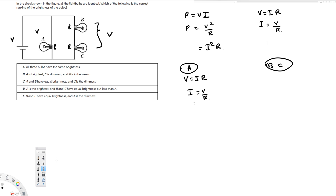Since B and C are in series, we can find the combined resistance R_BC. Because resistances in series just add directly, R_BC equals R plus R, which equals 2R. So the current through B and C is I equals V over 2R. We also need to find the voltage across each of them.